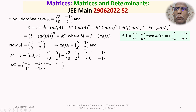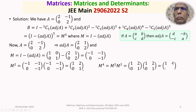We now multiply M with M to get M squared. M squared equals [-1, -1; 0, -1] times [-1, -1; 0, -1], which gives [1, 2; 0, 1]. To find M to the power of 4, we multiply M squared by itself: [1, 2; 0, 1] times [1, 2; 0, 1] equals [1, 4; 0, 1].